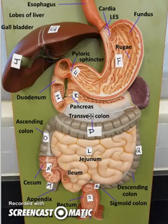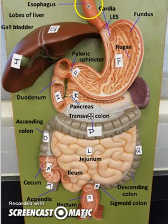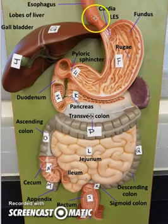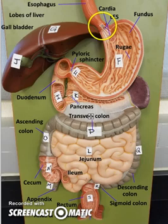Digestive system. We'll begin with the esophagus. The bolus, a round ball of food, rolling down, wrapped in mucins. It's going to pass by the LES, the lower esophageal sphincter.